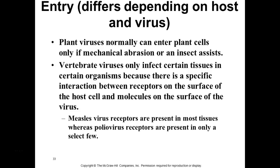For plants, viruses normally can't enter plant cells — they only get in through mechanical abrasion or with insect assistance. The cell wall is the barrier stopping most viruses. Insects can penetrate it, and mechanical abrasion can be as simple as wind creating a break in a leaf or stem.